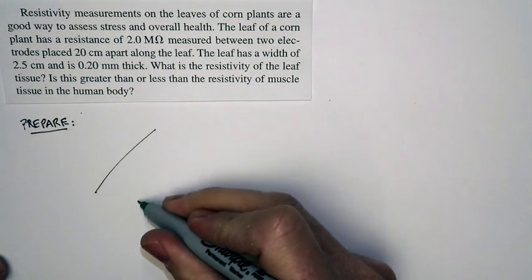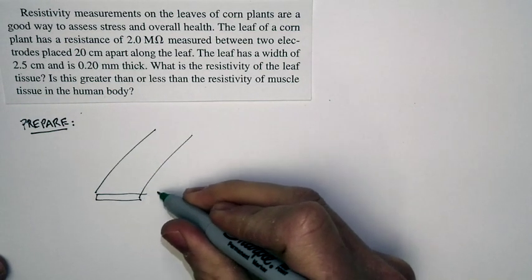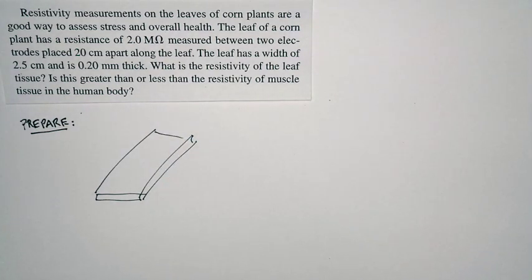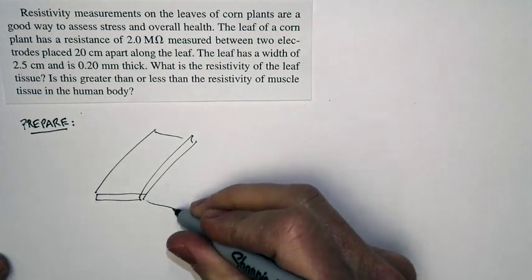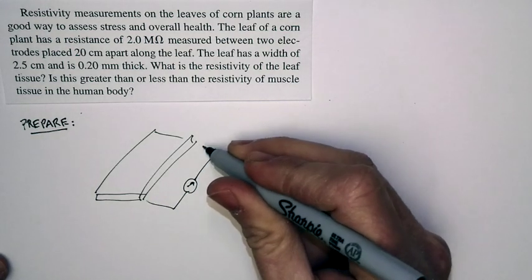So we have a leaf of a corn plant like so. It's got a certain width. It's got a certain thickness. We've placed electrodes some distance apart.